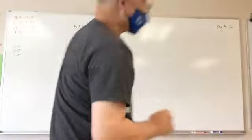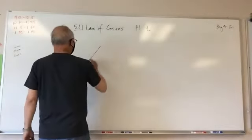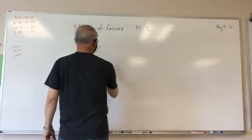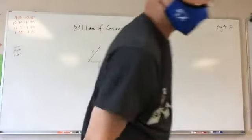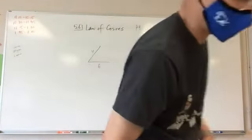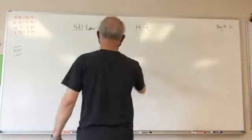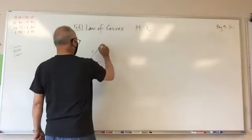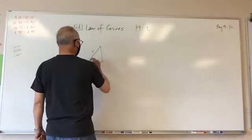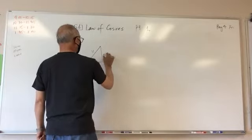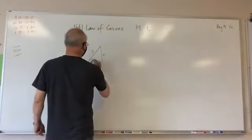Triangle ABC given that a is 11, b is 6, c we do not know. Angle C is 20 degrees, so this is 20 degrees.